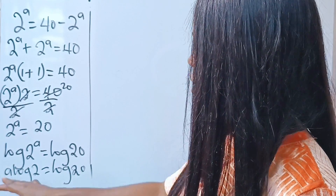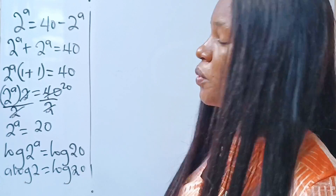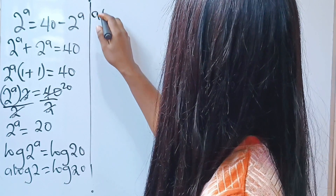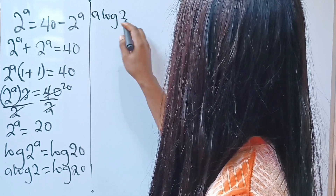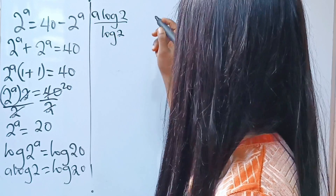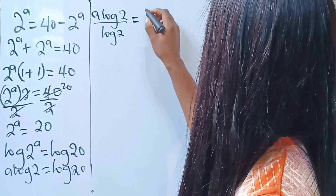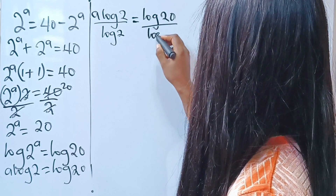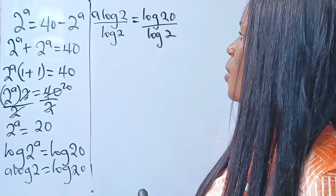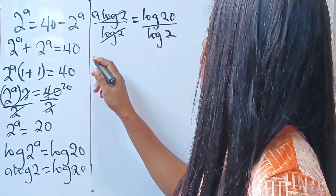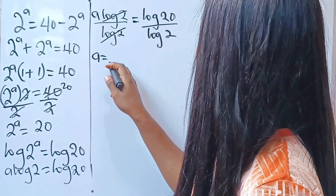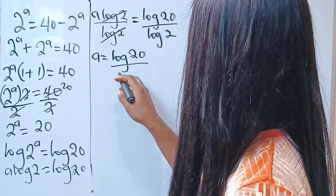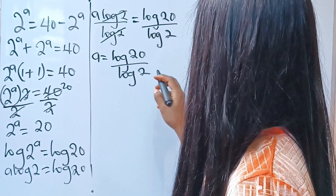Now we are looking for a. So let's divide both sides of this equation by log 2. And if we do that, we have a log 2 divided by log 2 is equal to log 20 divided by log 2. Log 2 is going to cancel log 2, and we have that a is equal to log 20 divided by log 2.